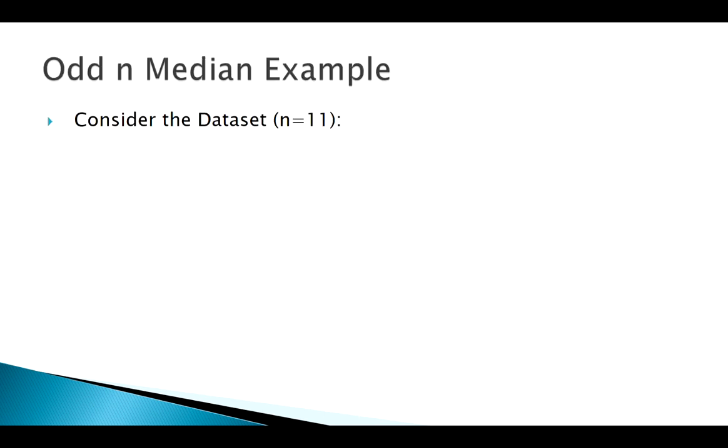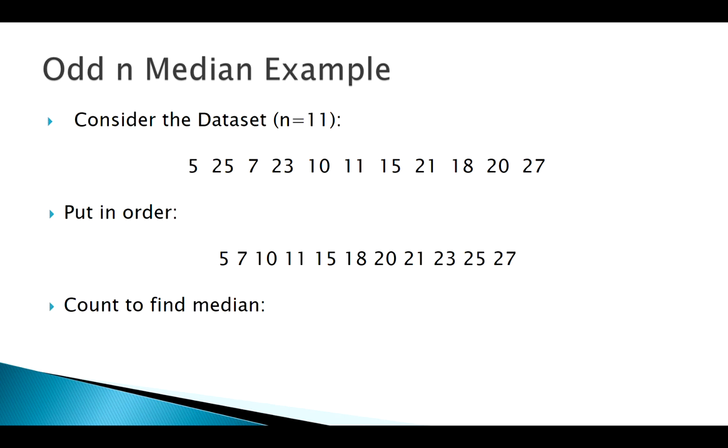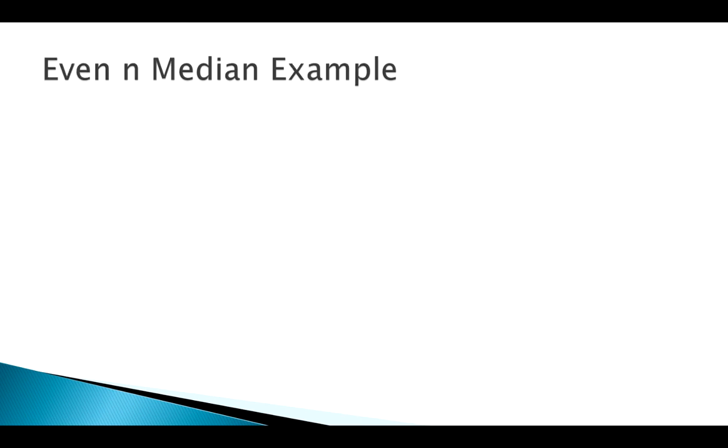If I have a data set here, n equal to 11, of course the first thing I've got to do, put it in order, count from the outside to find my median. So 27 and 5, 7 and 25 and so forth, right, to get to the middle and I find my median of 18.